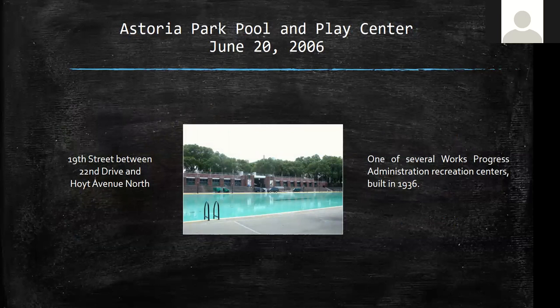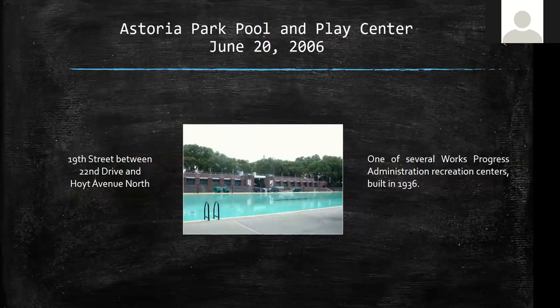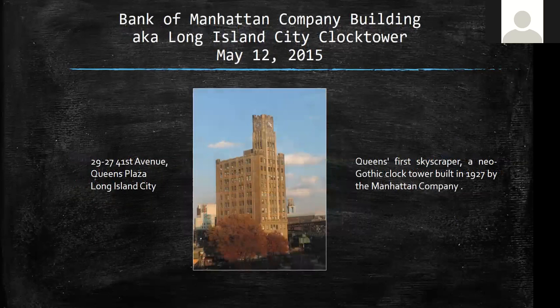That covers the historic districts in Long Island City. Now, individual landmarks. The Astoria Park and Pool Play Center — one of those WPA programs started by Robert Moses, who was an avid swimmer. It's the largest pool in the system and was actually his favorite pool, located in Astoria Park between 19th Street and 22nd Drive. The 1936 and the 1964 Olympic swimming trials were held in that pool. It's a really beautiful building.